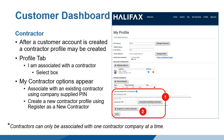Associating with a company allows you to apply for permits as a contractor on behalf of your clients or to apply for permits on behalf of the company you work for. Please note, Contractor Association is not the same as hiring or identifying a contractor to do the work on your permit.